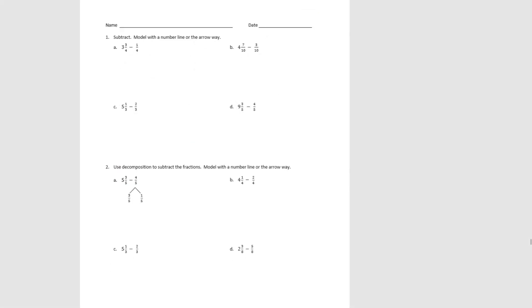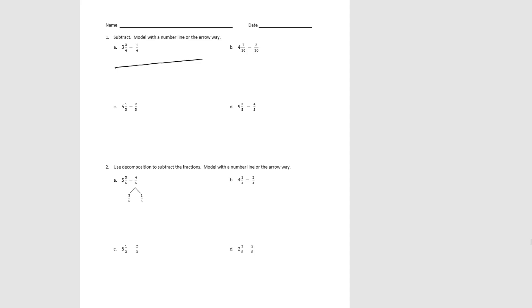Let's try some problems in our problem set. Number 1 says to subtract and then model either using a number line or the arrow way. Let's show the first one with a number line. We need to divide the whole number into fourths. We start with 3 and 3 fourths, and we're going to subtract 1 fourth to end up with 3 and 2 fourths, which is 3 and 1 half.